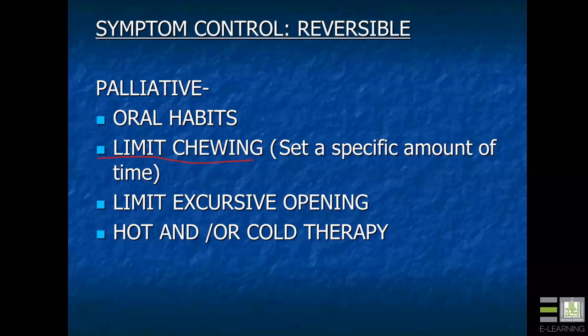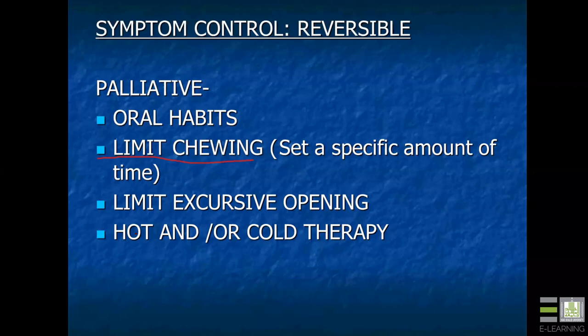We can limit excursive openings such as when yawning or sneezing. One of my favorite therapies is to tell the patient to extend the tip of their tongue up into the top of their mouth just behind their incisors and hold it there as they open or yawn. That keeps the opening movement to more rotation and limits translation of the temporomandibular joint, helping from re-injuring the area. I also like hot and/or cold therapy — my favorite is usually hot, moist heat; cold therapy has its indications too.